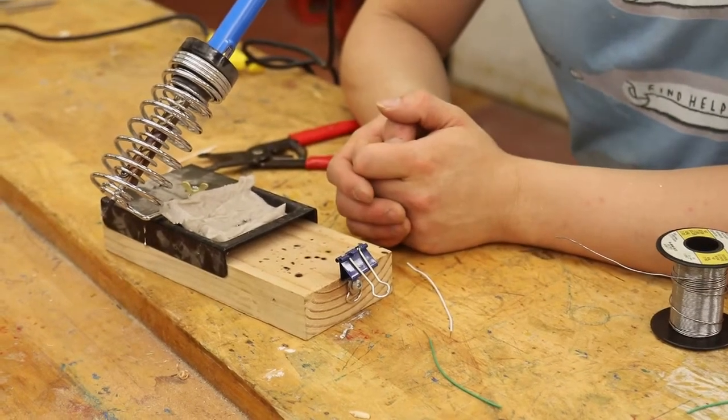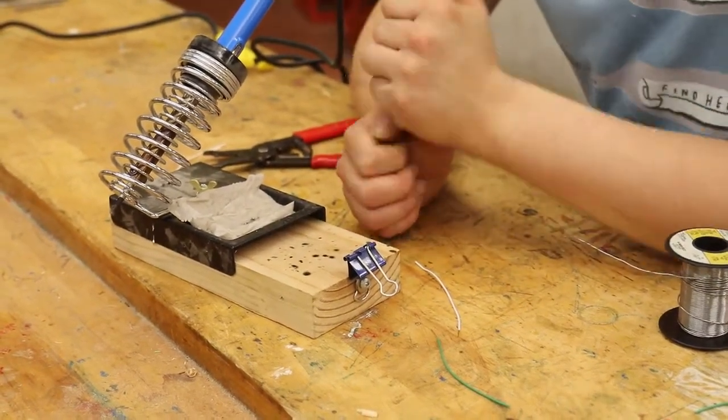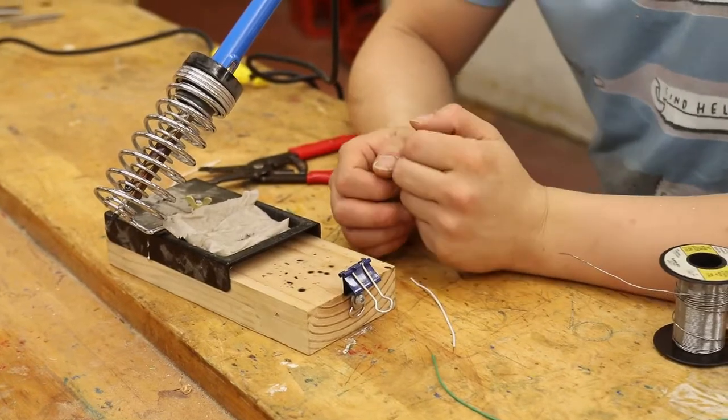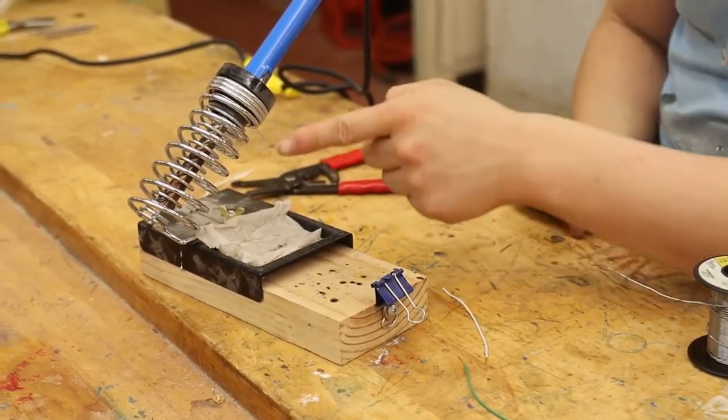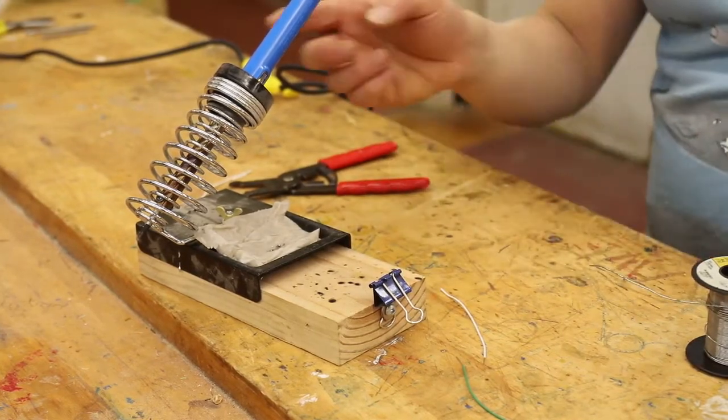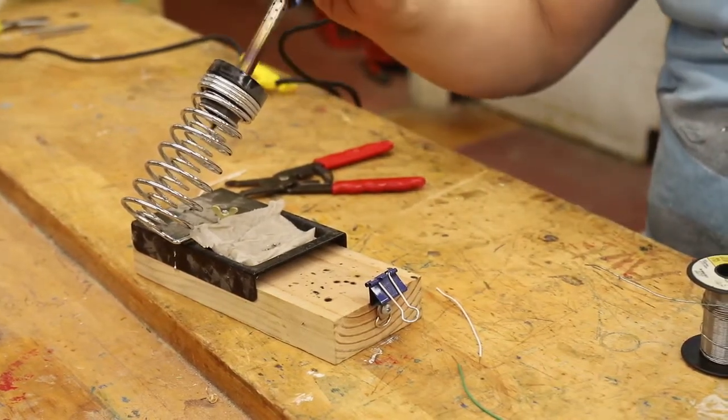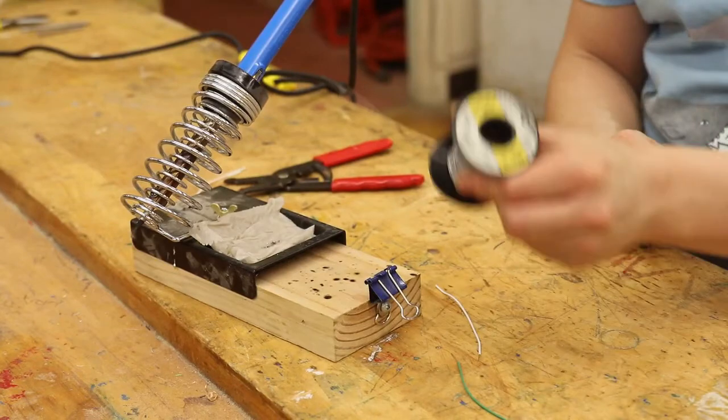For this demonstration I'm going to show you how to use a soldering iron. When you're soldering you're going to need a few things: a soldering iron stand, a soldering iron that's plugged in, and you're going to need some solder.